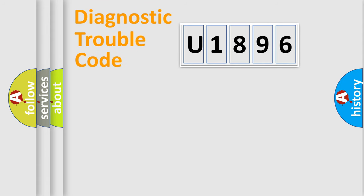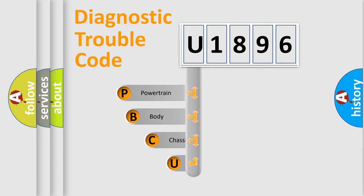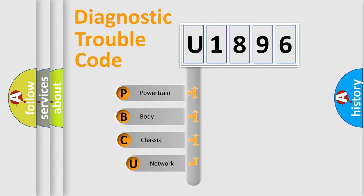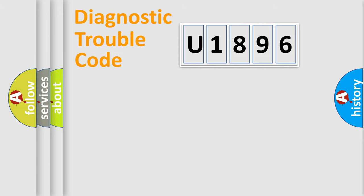Let's do this. First, let's look at the history of diagnostic fault code composition according to the OBD2 protocol, which is unified for all automakers since 2000. We divide the electric system of automobile into four basic units: Powertrain, Body, Chassis, and Network.